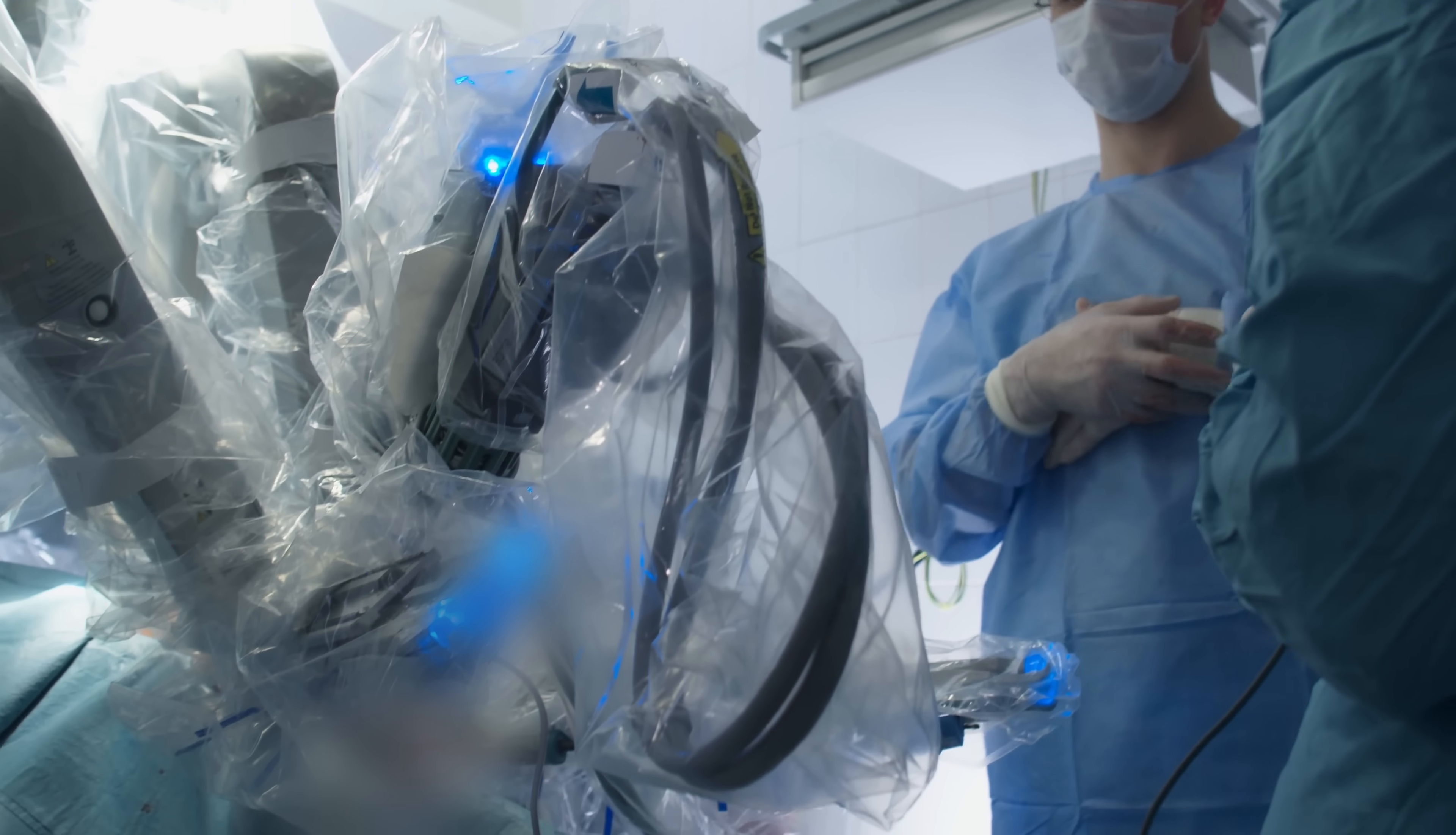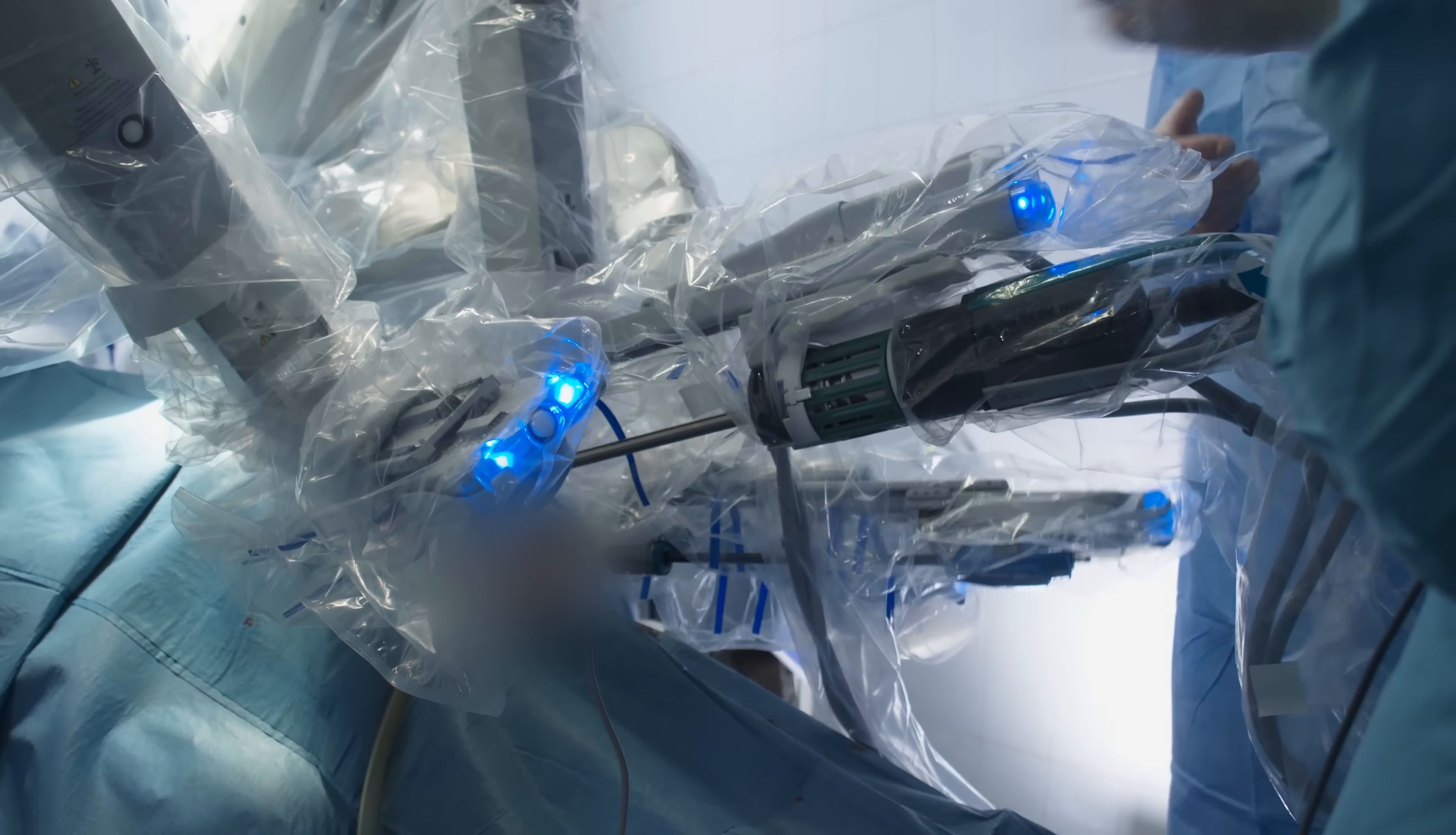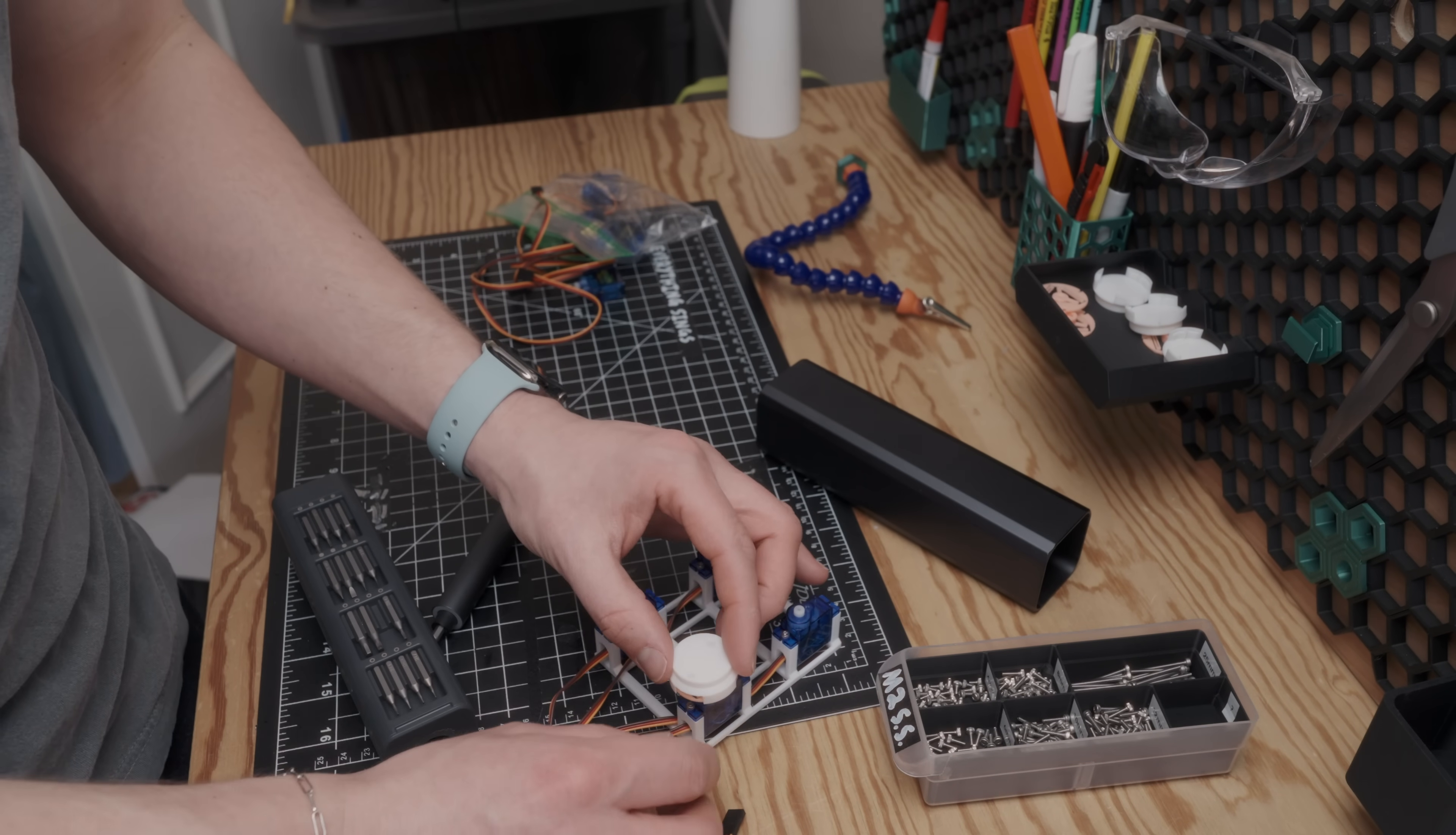Now the Da Vinci Si robot that these instruments are compatible with has four robotic arms. Three of them you'll put an instrument on, and one of them is for the endoscope. Because these instruments are sterilized between each use, it makes sense to have the electronics, the motors, and basically anything of value inside the robot arm itself. So I threw together a super rough prototype which has four motors and some discs to allow this thing to couple with the instrument, typed up some code, and immediately broke my prototype.